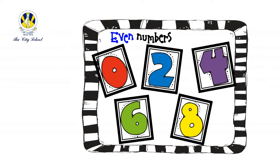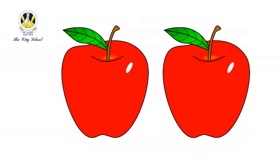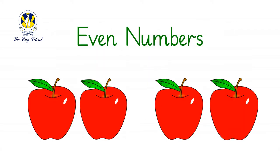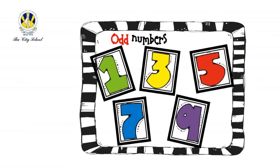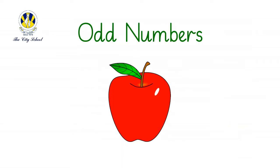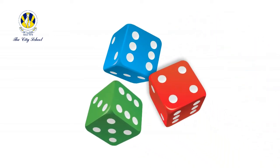An even number is a number that can be paired equally. A pair means two. So when we are talking about even numbers, we are talking about numbers that can be paired into twos. An odd number is a number that cannot be paired equally — it is a number that is kind of left alone. We will talk about that more as we go through this lesson.